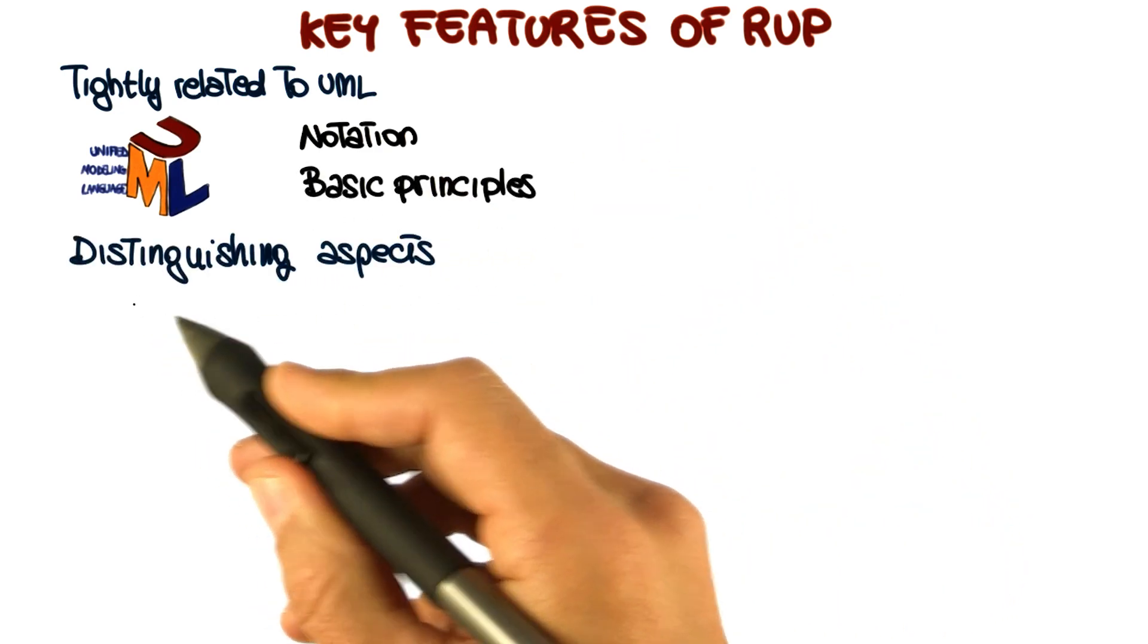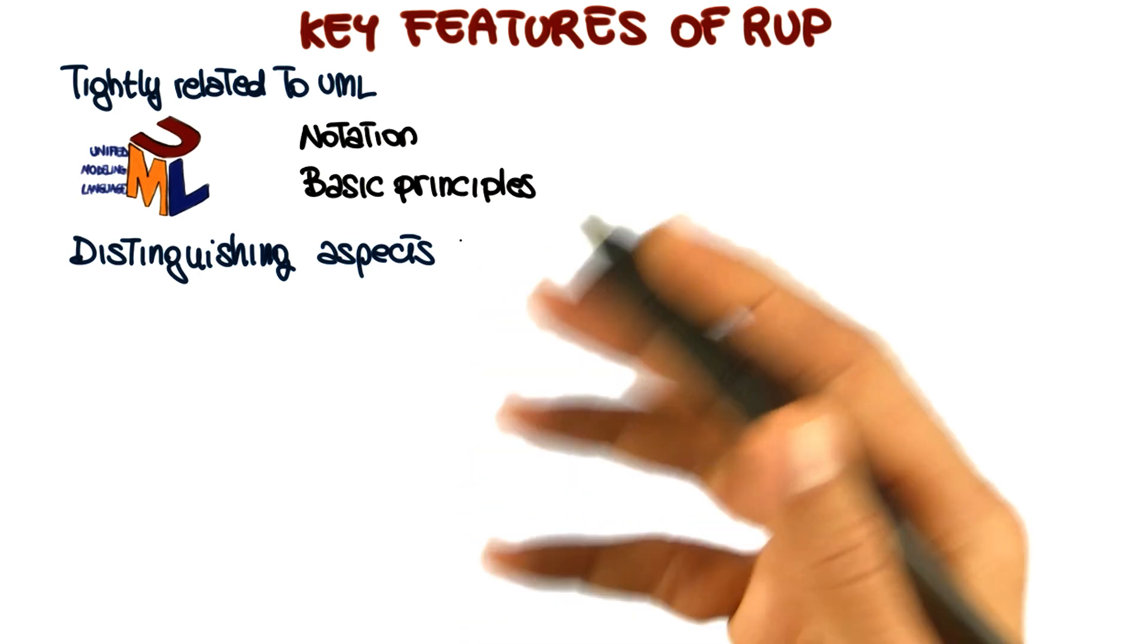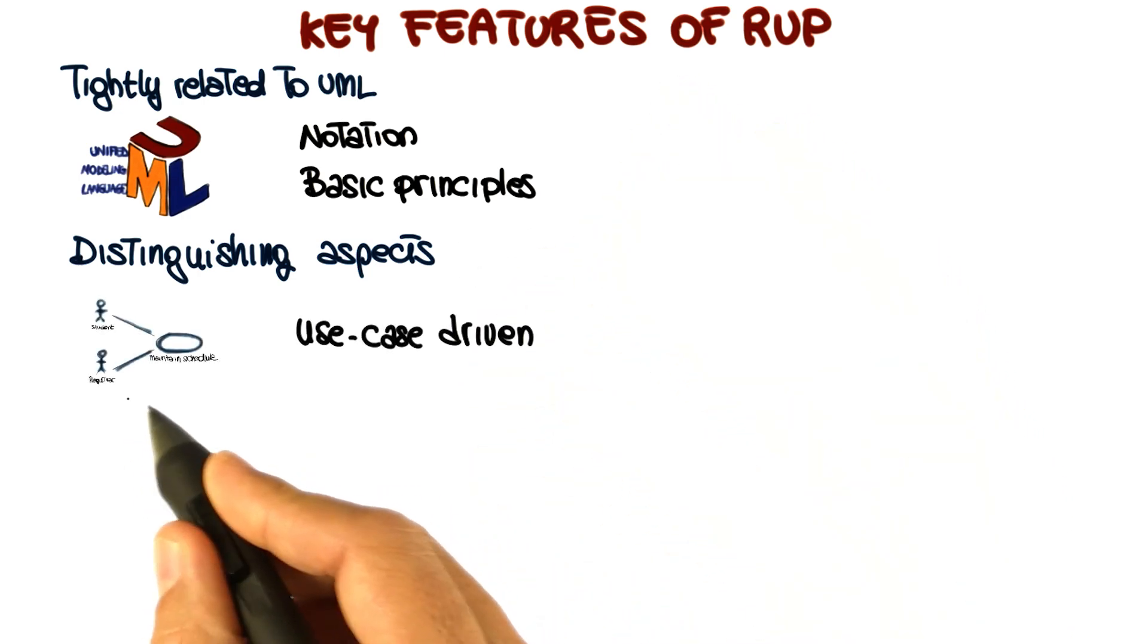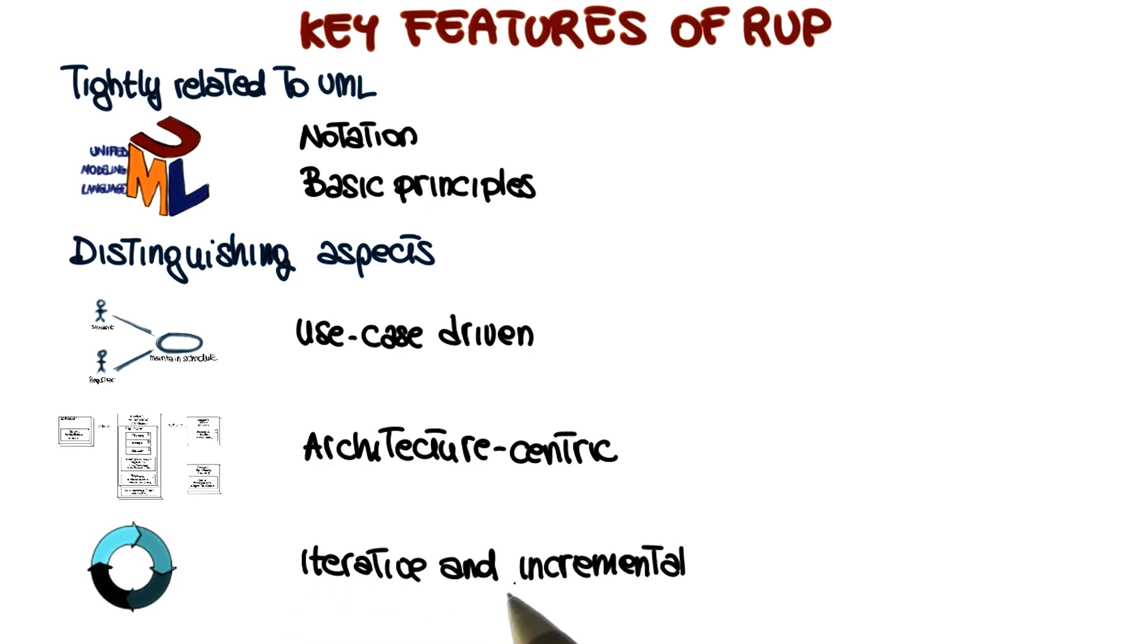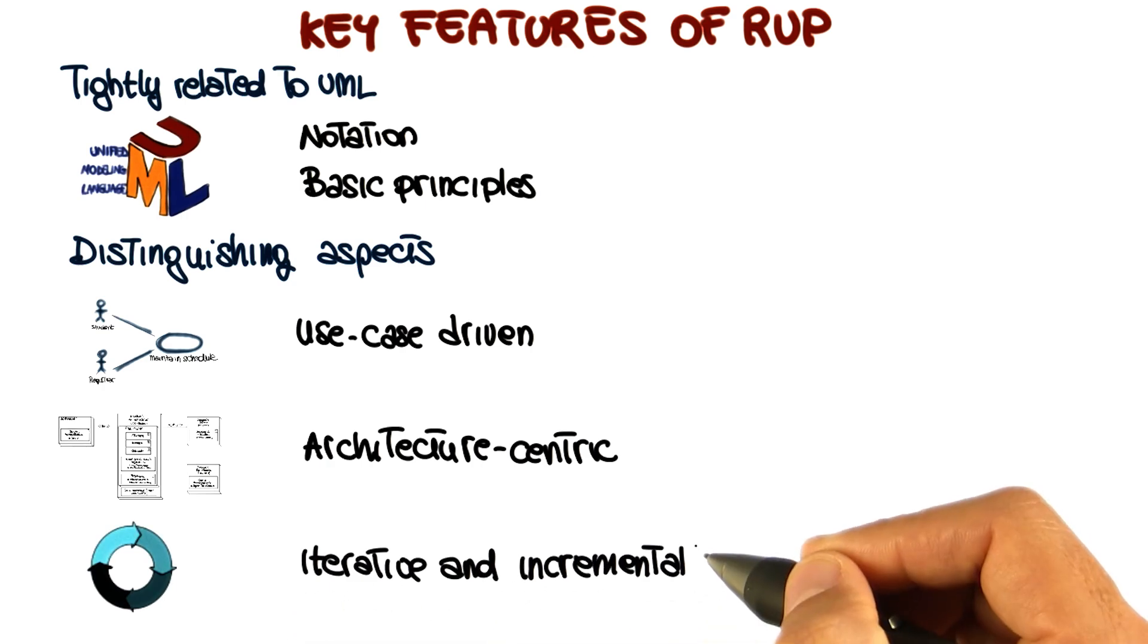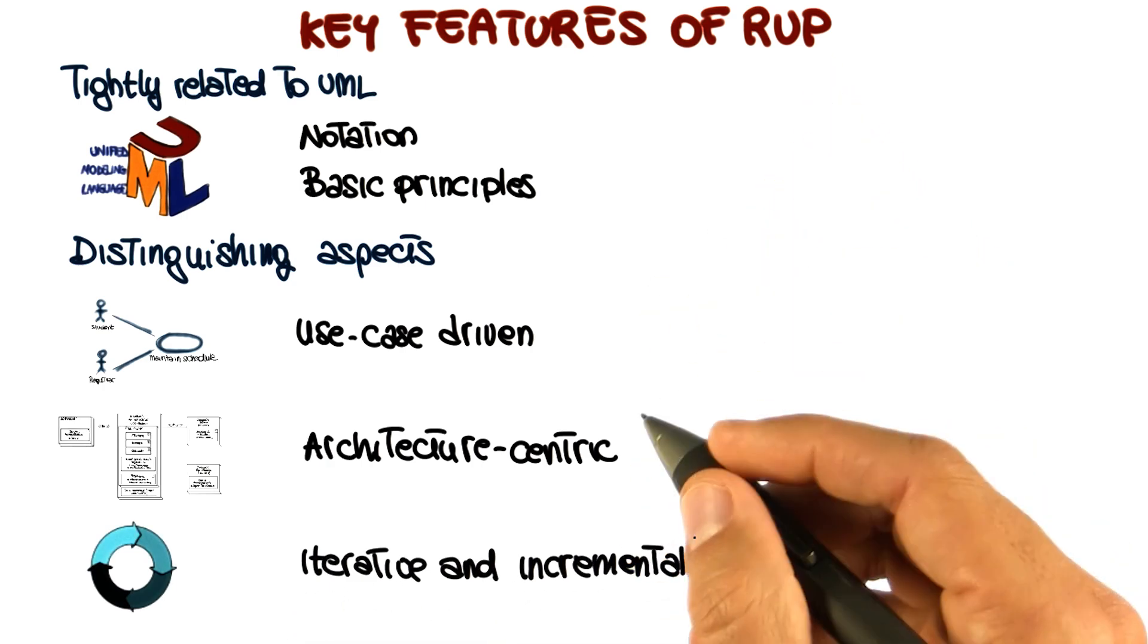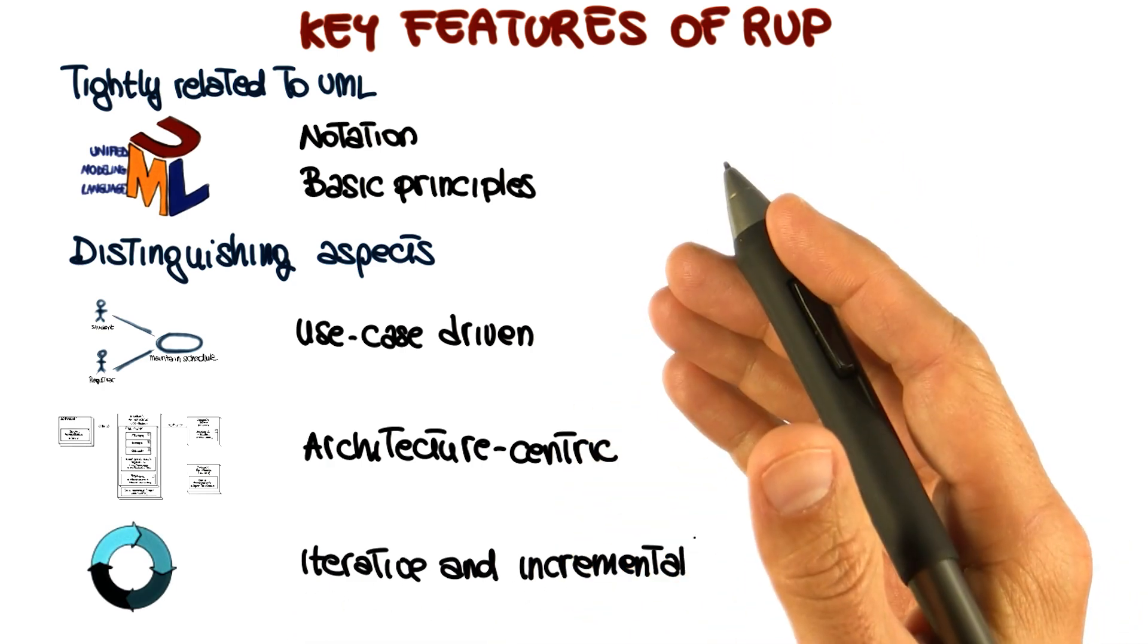Finally, the three main distinguishing aspects of the Rational Unified process are that it is use case driven, architecture centric, and iterative and incremental. So let's now look in more detail at these three distinguishing aspects, and we're going to look at each one of them individually.